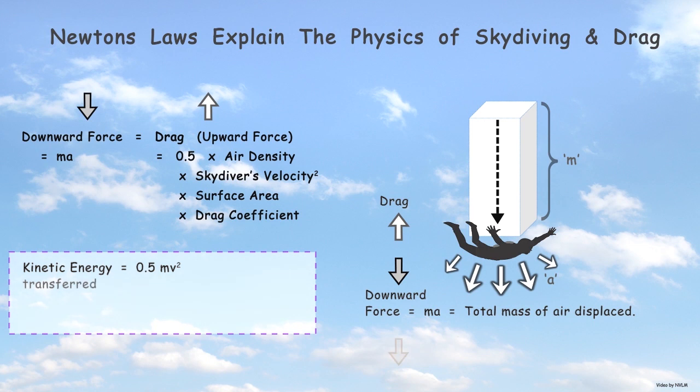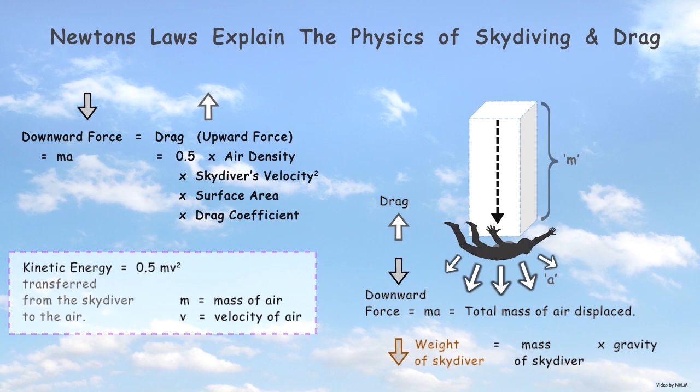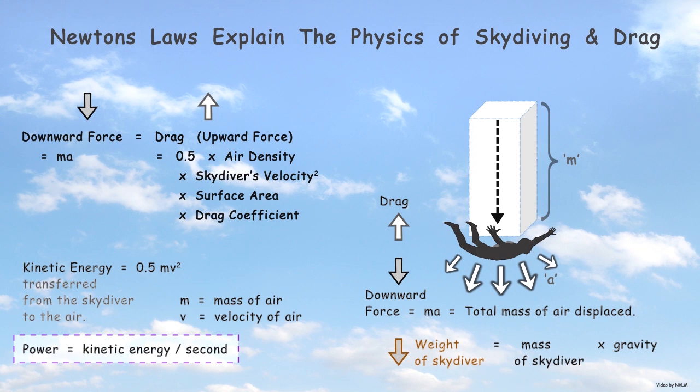The kinetic energy can be estimated using the standard formula half mv squared. Similarly, the power generated is simply the energy transferred each second.